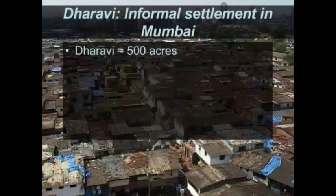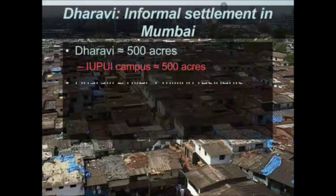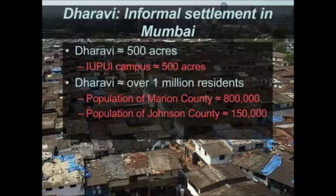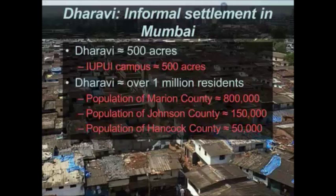Dharavi is an informal settlement in Mumbai, about 500 acres. To illustrate how dense and crowded this is: IUPUI's campus is also about 500 acres — they're the same size. Dharavi has over 1 million residents. That would be like putting the population of Marion County (800,000), plus Johnson County (150,000), plus Hancock County (50,000) — all three counties — inside IUPUI's campus. Pretty darn packed and dense.